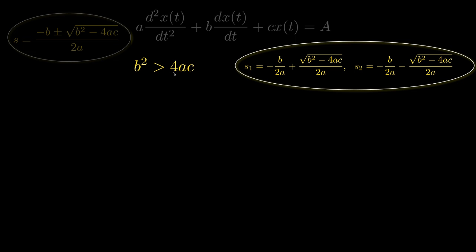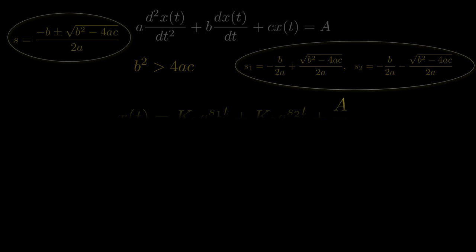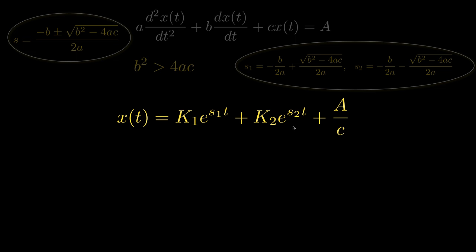If b squared is greater than 4ac, then we'll be taking the square root of a positive number, and the roots for the characteristic equation will both be real valued. For this situation, the natural response will be the sum of two exponential terms whose coefficients s1 and s2 are the roots of the characteristic equation. The total response will include both the natural response and the forced response. The roots s1 and s2, along with the forced response a over c, are determined by the original differential equation, but the constants k1 and k2 that multiply each exponential term must be determined by including two initial conditions.